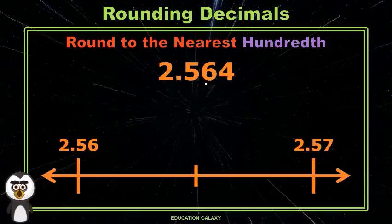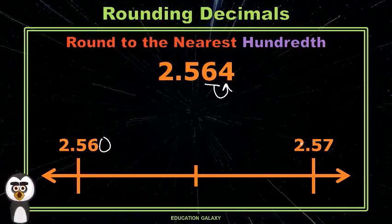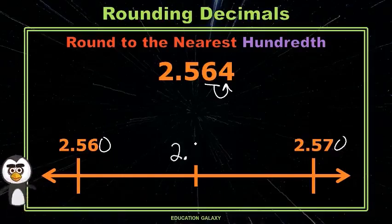So if we are rounding to that place, we're going to use the thousandths to help us determine if we should round up or round down. Now again, think of this as two and fifty-six hundredths. Think of it as two and five hundred sixty thousandths. And think of this as two and five hundred seventy thousandths. And what would be between five hundred sixty and five hundred seventy? You got it. Two and five hundred sixty-five.